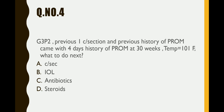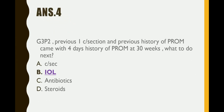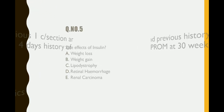Question number 4: a patient with a previous caesarean section and previous history of PROM presents with a 4-day history of PROM at 30 weeks. Options are C-section, IOL, antibiotics, and steroids. Since she had a previous PROM and now has a raised temperature suggesting developing chorioamnionitis, induction of labour (IOL) is the right answer. B is correct.